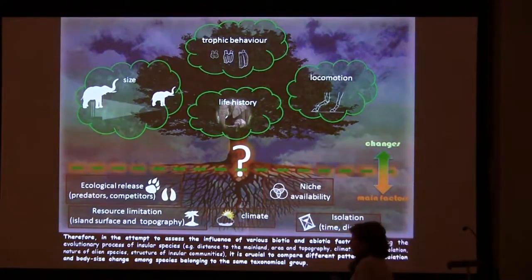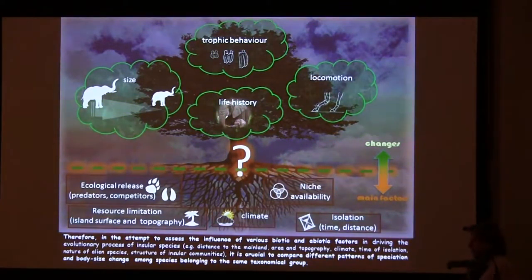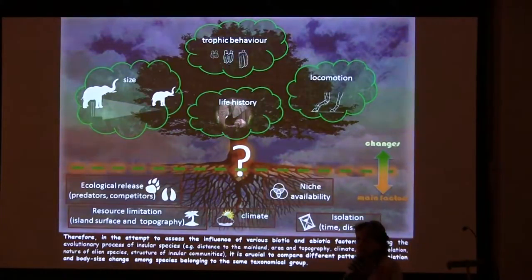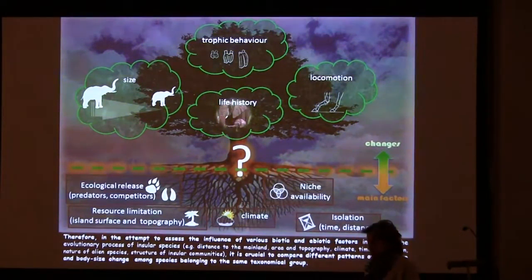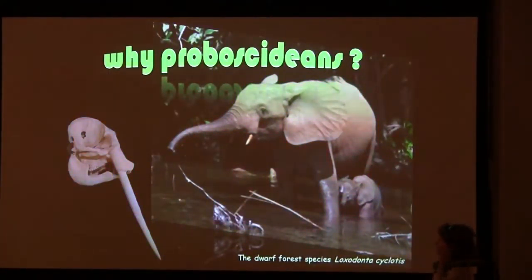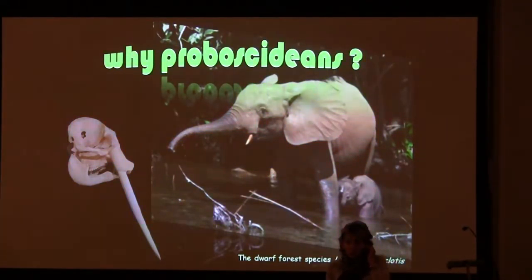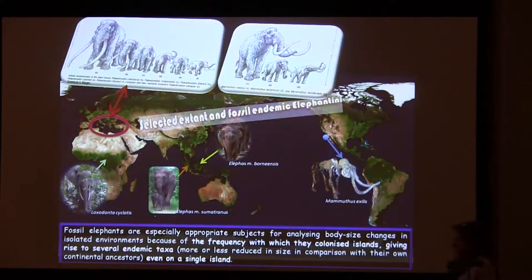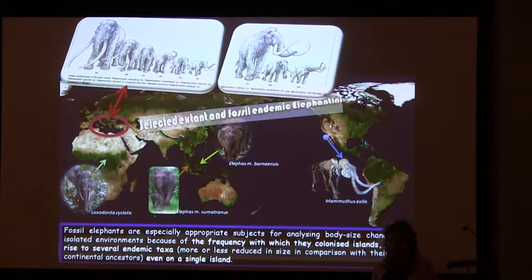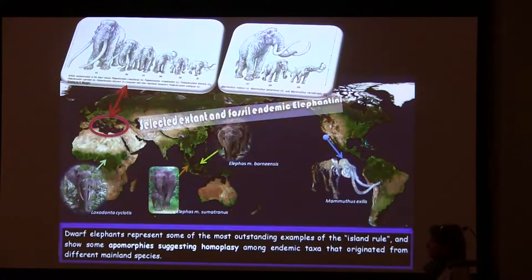In my personal opinion, to try to understand the problem it is necessary to compare the evolutionary trajectories of species that originated from the same ancestor that colonized islands with different surface areas, in different geographical contexts, and maybe at different times. So I chose to speak about the Proboscideans.